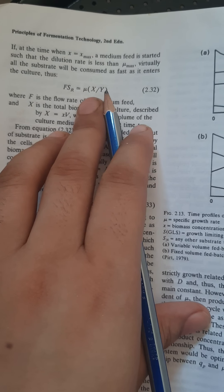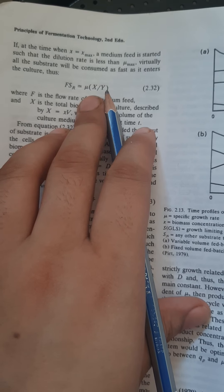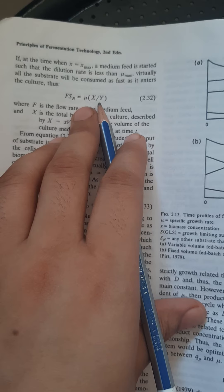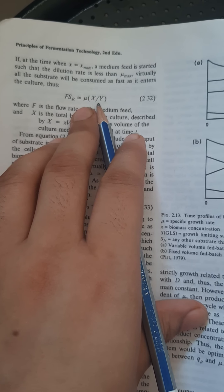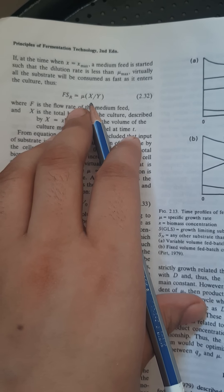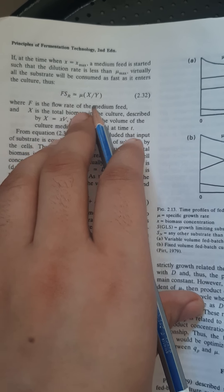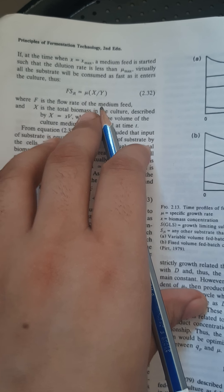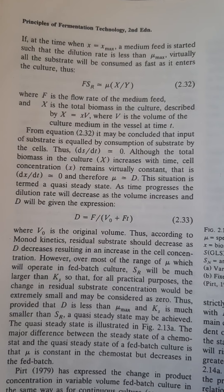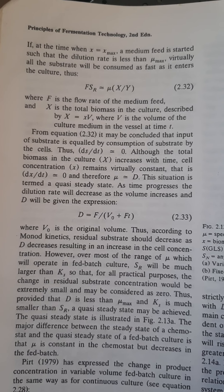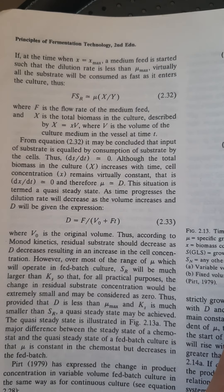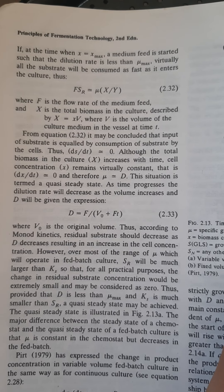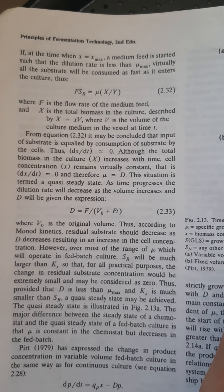The final biomass concentration produced when S equals zero may be described as X maximum. Provided X0 is small compared with X maximum, then X maximum equals Y·Sr. When the dilution rate is less than mu-max, virtually all the substrate will be consumed as fast as it enters the culture. Then F·Sr equals mu·X divided by Y, where F is the flow rate of the medium feed, X is the total biomass in the culture, and V is the volume of culture medium in the vessel at time t.